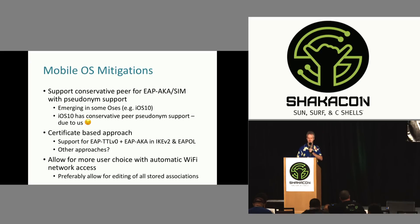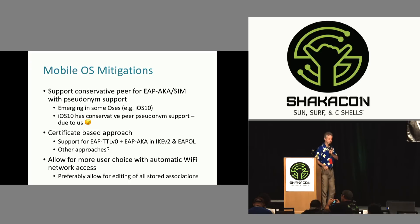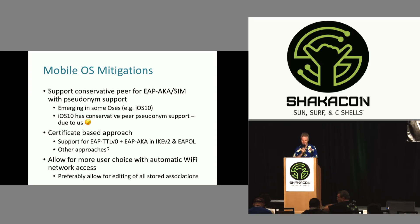Mobile OS mitigations: they need to support EAP-AKA with pseudonym support — and it's emerging in some OSes. Apple told me they basically introduced this feature into iOS 10 directly as a result of our work. Then there are certificate-based approaches that need to be implemented into the OSes. They may have support, but they're not always so keen on discussing whether it properly works with everything. And it would be nice if there were a bit more user choice associated with some of these automatic Wi-Fi networks.